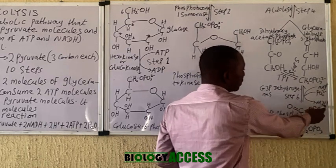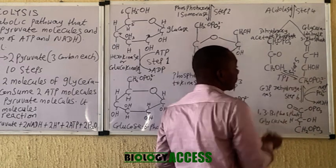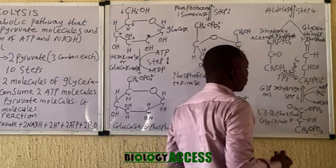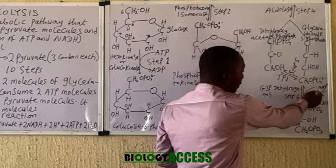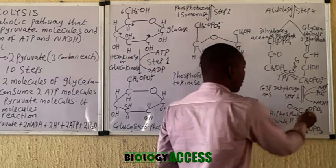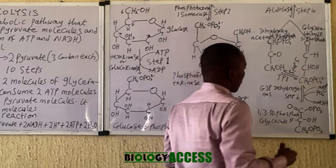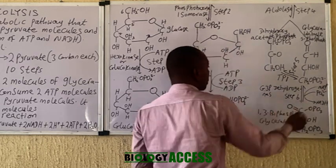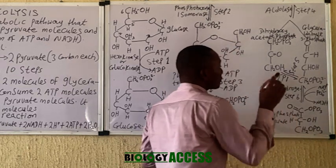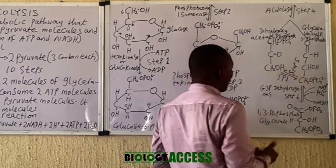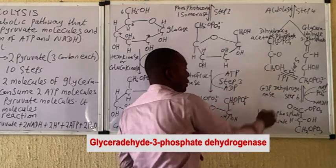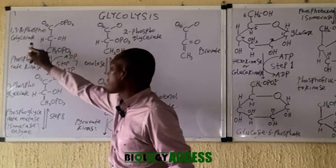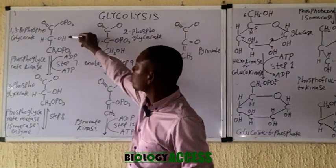Because two glyceraldehyde-3-phosphate molecules are entering this step, the reaction generates two NADH in total. NADH plays a role in energy generation in the human body. This reaction is catalyzed by the enzyme glyceraldehyde-3-phosphate dehydrogenase. Step six produces 1,3-bisphosphoglycerate.